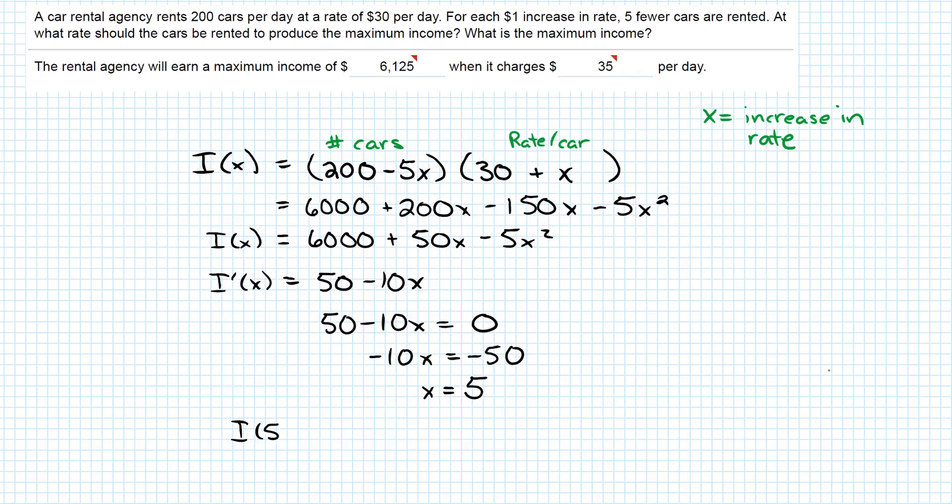Let's go ahead and do that. I of 5 equals 6,000, and I'm plugging it into the simplest version of the function here, the last one I did before I took the derivative. Honestly, you can plug it into any step, but this one's just going to be a little bit cleaner. So 6,000 plus 50 times 5 minus 5 times 5 squared.